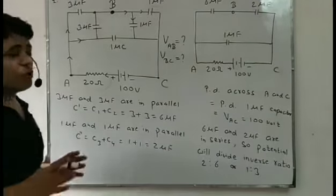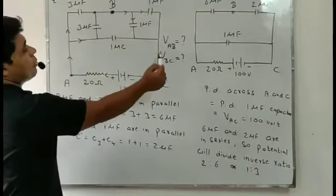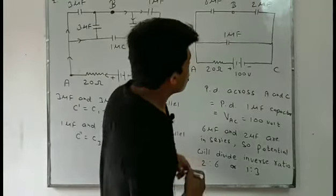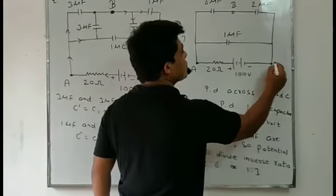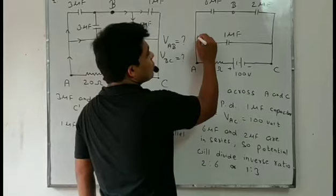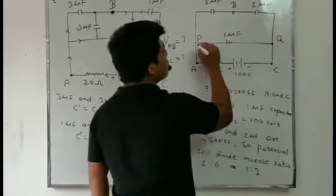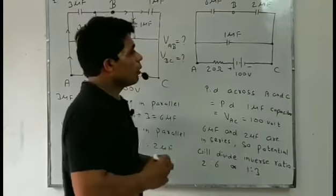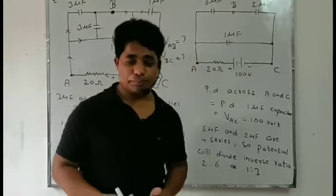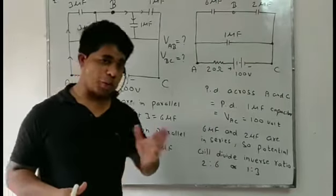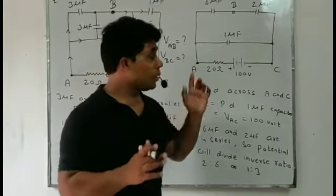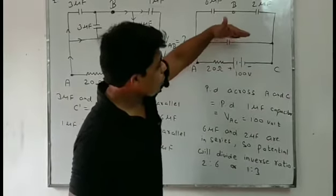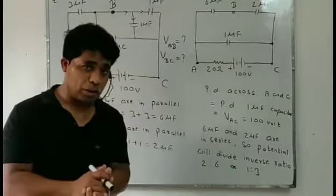Now we will find the potential difference across AB and BC. It should be clear that all are held parallel. The potential difference across AC should equal the potential difference across PQ — at 1 microfarad. When two or more wires are parallel, potential will be the same. This AC wire has a 100 volt battery, so the potential difference across AC is 100 volts, and the potential difference across 1 microfarad should also be 100 volts.